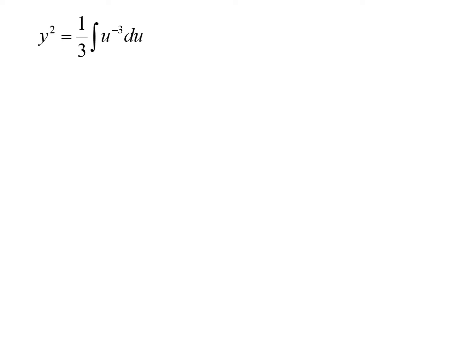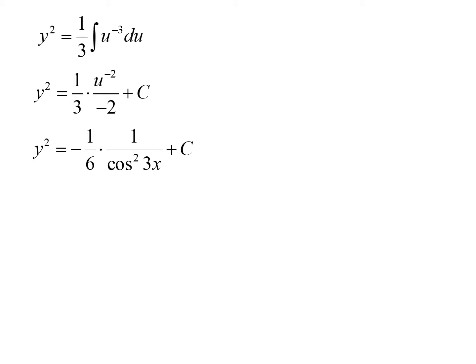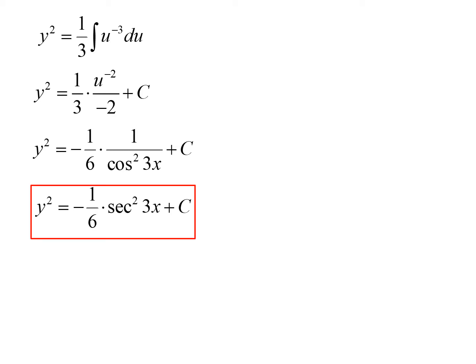This gives us y squared equals 1 third times the integral of u to the negative 3 du. Integrating gives y squared equals 1 third times u to the negative 2 divided by negative 2 plus c. Simplifying by multiplying the coefficients and re-substituting u equals cosine of 3x, we get y squared equals negative 1 sixth times 1 over cosine squared 3x plus c. Using the reciprocal identity, 1 over cosine equals secant, so y squared equals negative 1 sixth times secant squared 3x plus c.